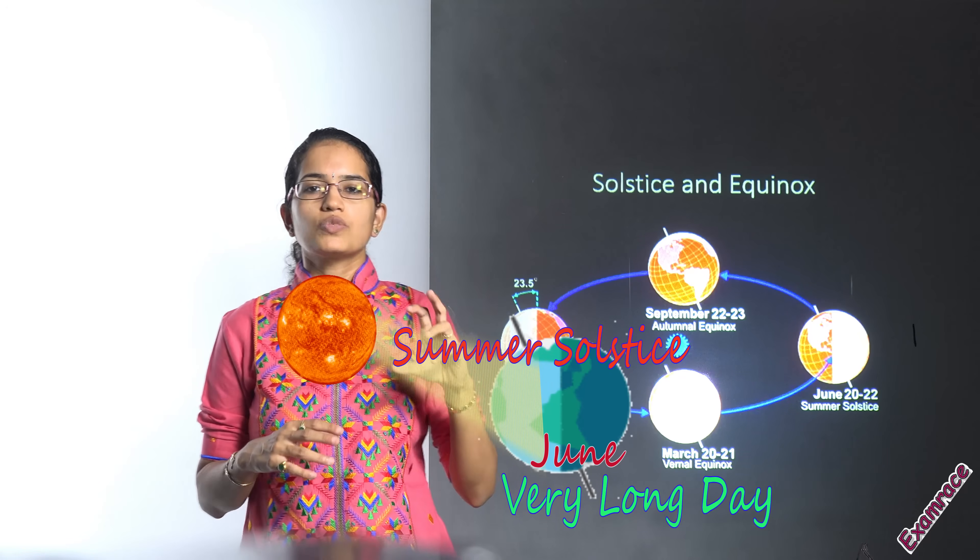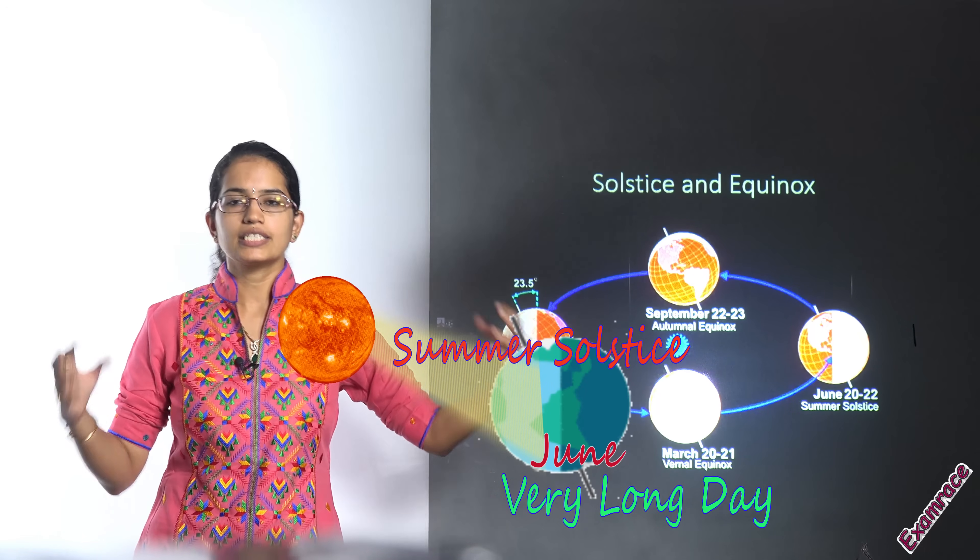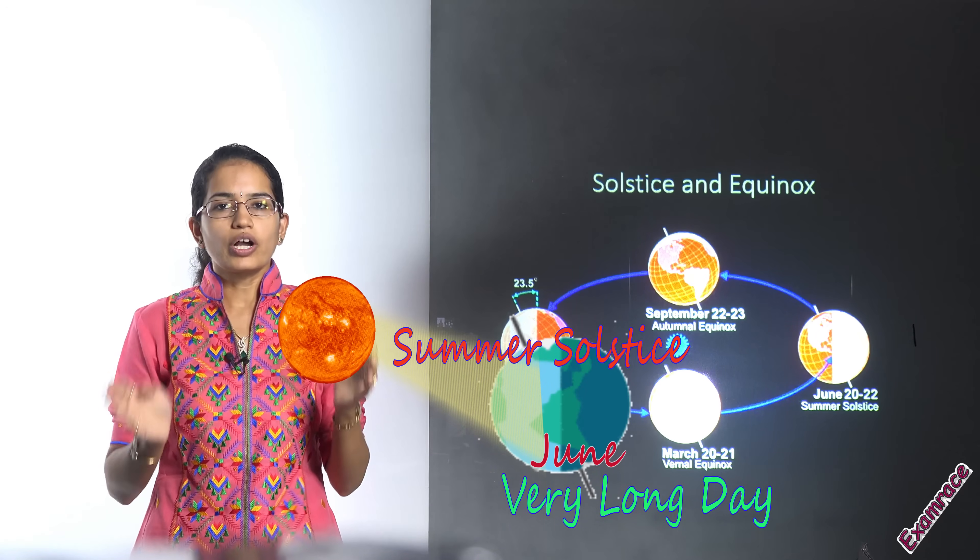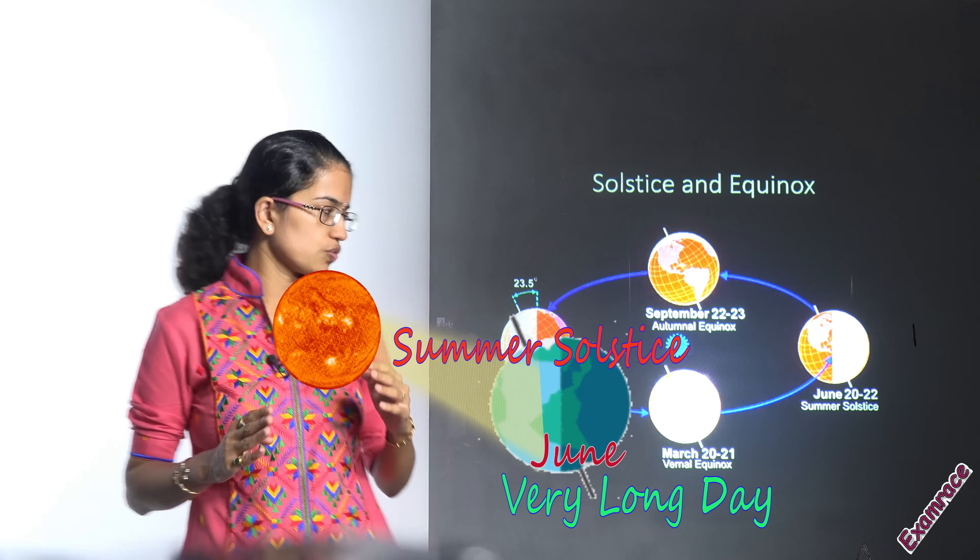So summer solstice in Northern Hemisphere would lead to longer days and shorter nights. The longest day and the shortest night would be seen on 21st of June.